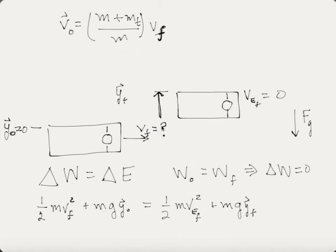Since y_initial equals zero, that term goes to zero. And since the velocity at the top of the swing is zero, that kinetic energy term also goes to zero. The masses cancel, and we end up with v_f = √(2g·y_f).